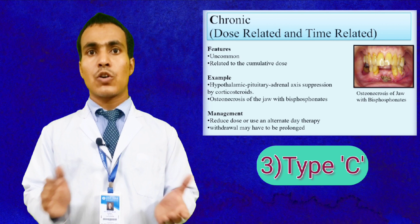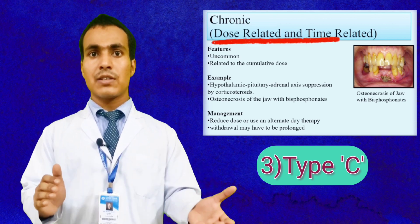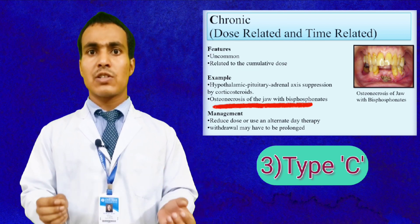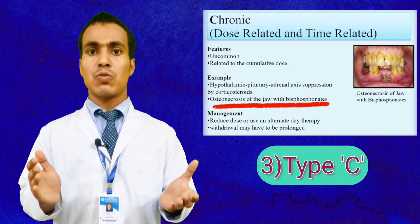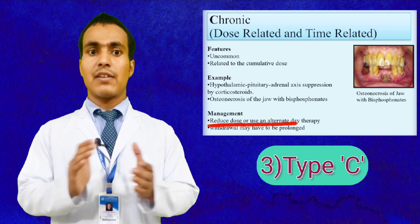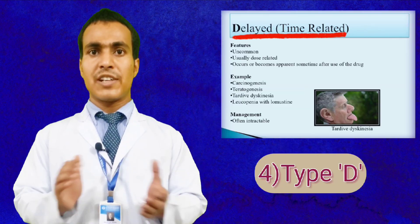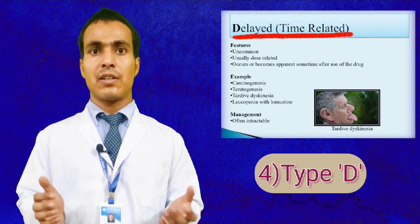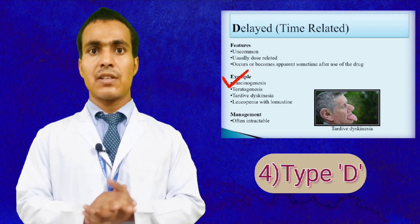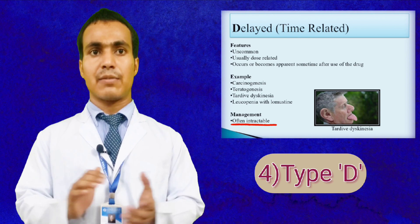Type C — Chronic, which is dose-related and time-related. Its feature is related to cumulative dose; example is osteonecrosis of the jaw with bisphosphonates; management is reduced dose or use alternate therapy. Type D — Delayed, which is time-related. Its feature is usually dose-related; example is tardive dyskinesia; management is often difficult.